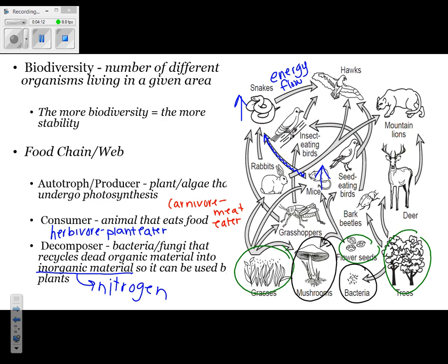However, if the question asked what would happen to the flower seed population, you'd follow the arrow pointing from the mouse back to the flower seeds, showing that mice eat flower seeds. Since there are more mice, the flower seeds are actually going to decrease in number because many mice will be eating them.